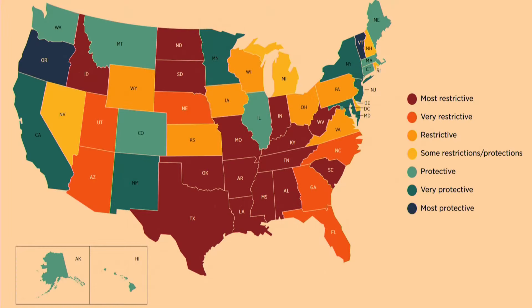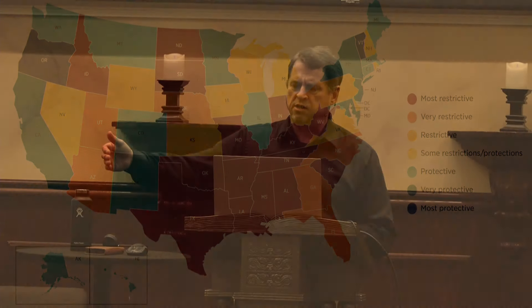In 2022, the Supreme Court overturned Roe v. Wade. As a consequence, many states enacted laws either restricting or expanding abortion rights. When North Carolina enacted restrictions in 2023 against abortions after 12 weeks of gestation and required in-person counseling, facility-based abortions dropped by one-third the very first month.